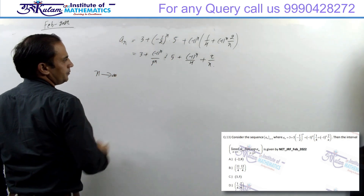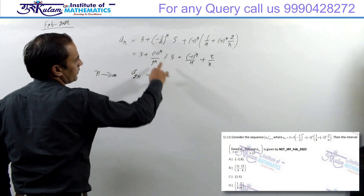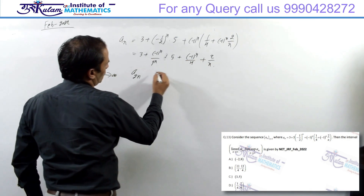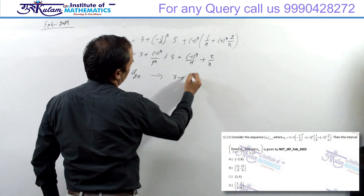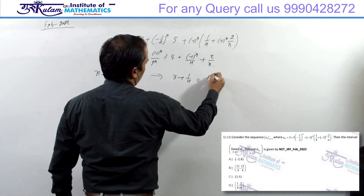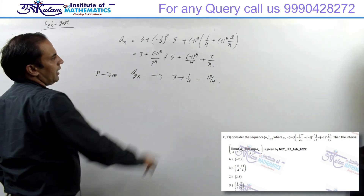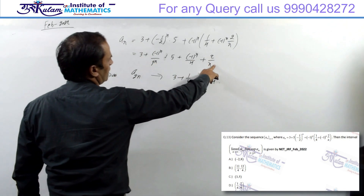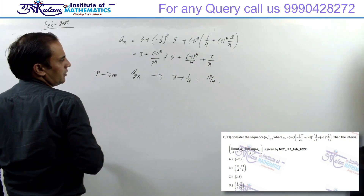n tends to infinity पर, even term का sequence a_{2n} में: पहली quantity 0 पे tend करेगी, दूसरी 0 पे, और तीसरी 1/4 पे tend करेगी। तो overall quantity tend करेगी 3 + 1/4, which is 13/4।